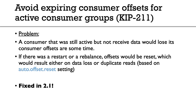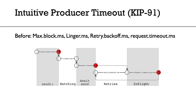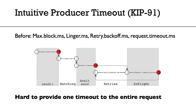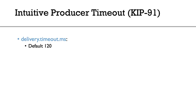Next is the intuitive producer timeout. Previously, four settings — `max.block.ms`, `linger.ms`, `retry.backoff.ms`, and `request.timeout.ms` — were chained together, making it hard to define a single send timeout. This is now fixed with a new setting called `delivery.timeout.ms`, which provides an upper bound on how long you'll wait until a message is delivered, covering all the way from batching to send. It defaults to 120 seconds.